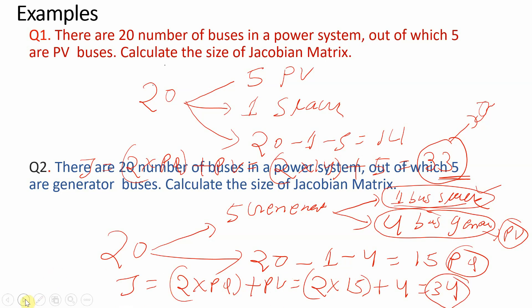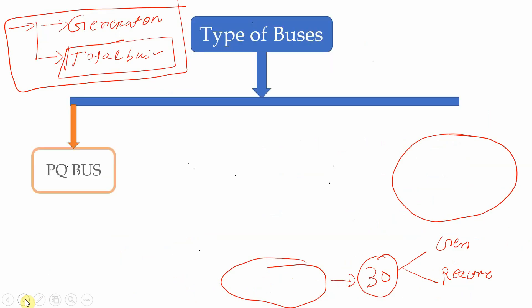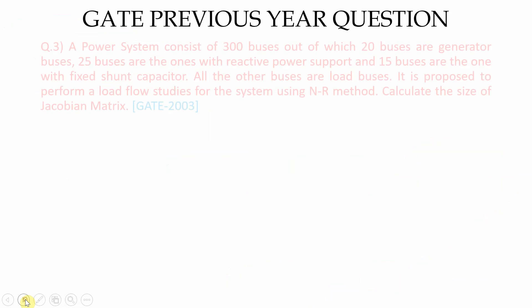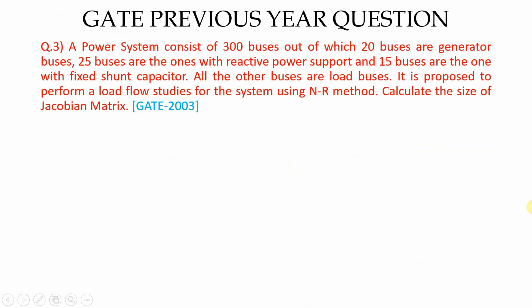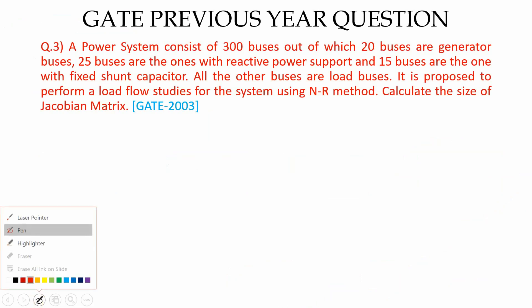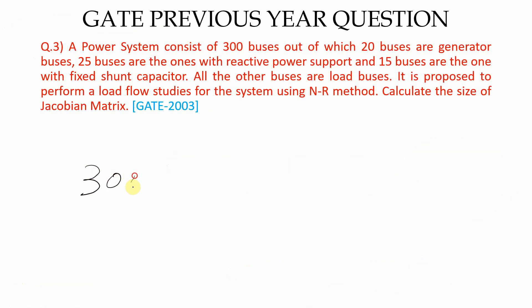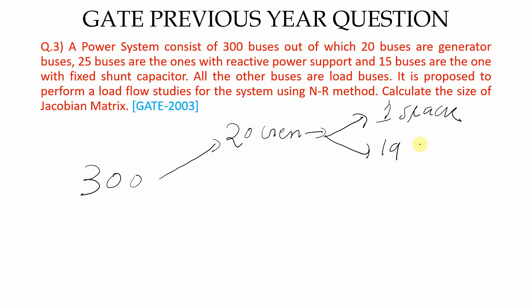Now let's take a previous year GATE question to solidify the concept. There are 300 buses in a power system out of which 20 are generator buses, 25 are reactive power support buses, and 15 buses have fixed shunt capacitors. Seeing 20 generator buses, my first task is to select a slack bus. I take one from the generator buses, so 19 remain as generator buses.